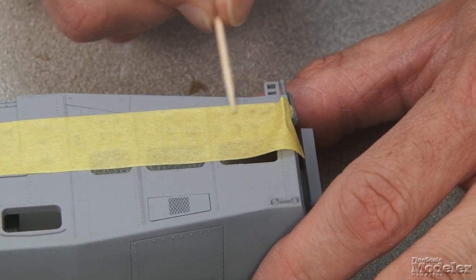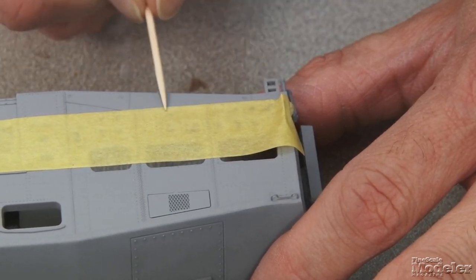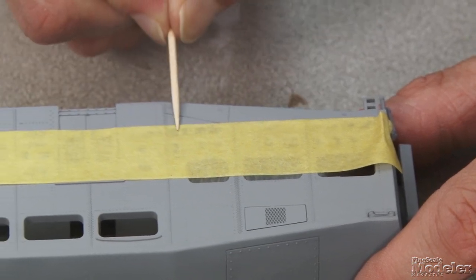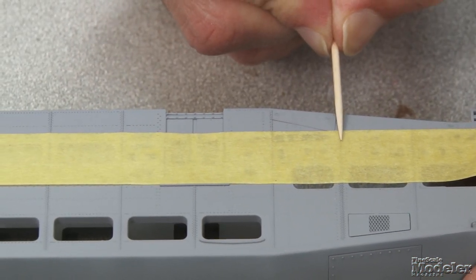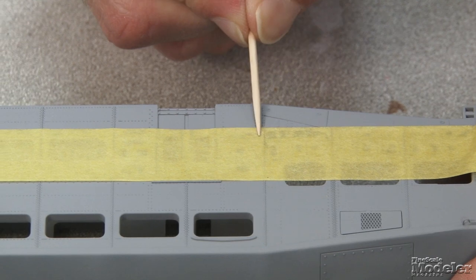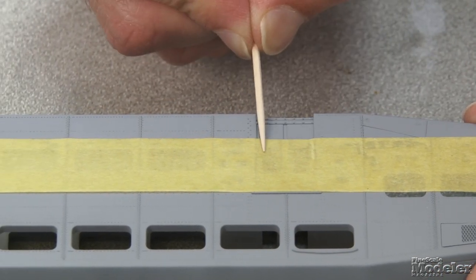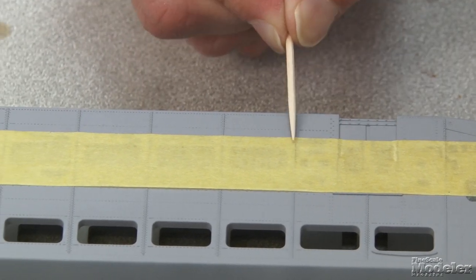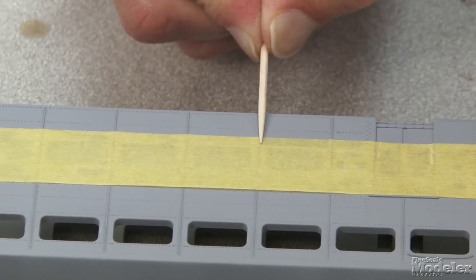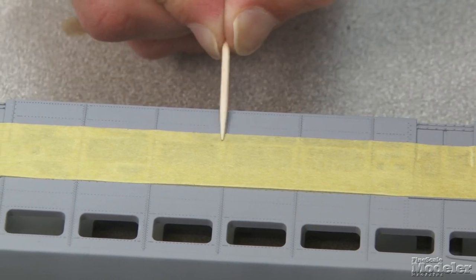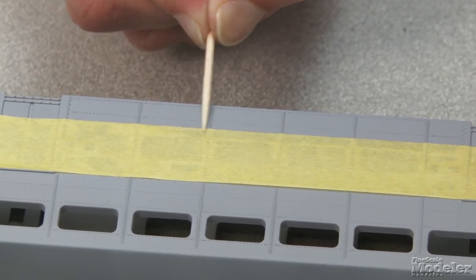To make sure we get a good seal, it's important to burnish the edge. I'm using a wooden toothpick and just work on either side of these seam lines here, inside the door. You just want to be sure that it seals along the edge as firm as possible so you don't get any paint bleeding under there.